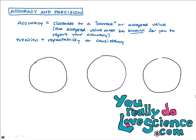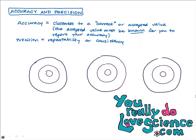Let's draw some dart boards to visually understand the difference between accuracy and precision — even though I'm not very good at drawing circles. All you need is one dart to show good accuracy. Bam — there's the dart, we hit the bullseye. That is good accuracy. Precision is repeatability, so you could have good precision by having your darts all land in the same spot without hitting the bullseye, without being in the spot you wanted. So here we have good precision but poor accuracy.